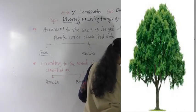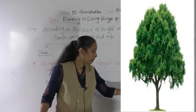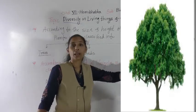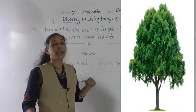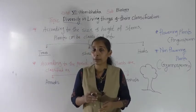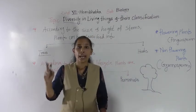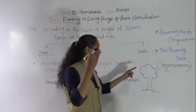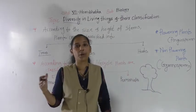The branches of the trees are on the upper part, above the ground, with a large distance between the branches and the ground. These trees can survive or live for a long period of time, and that is why they are called perennial. Trees are very tall, have a very strong, hard, and thick brown-colored stem, branches are on the upper side above the ground, and they can survive for a long period of time.